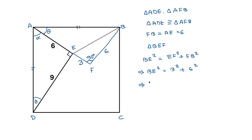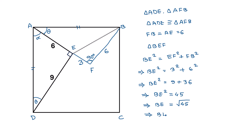So BE² equals 3² plus 6², which is 9 plus 36, giving BE² equals 45. Taking the square root of both sides, BE equals √45. Since 45 equals 9 times 5, we get BE equals 3√5.